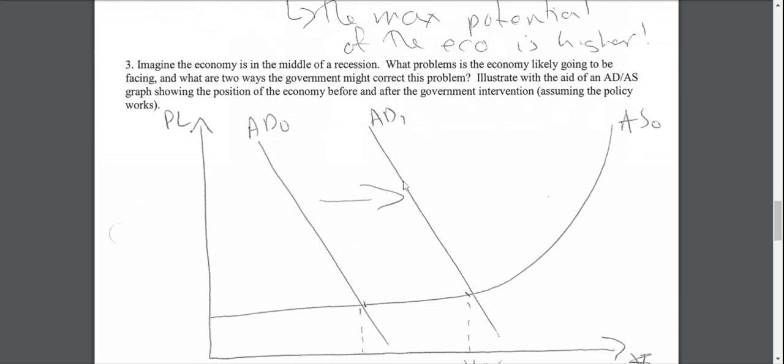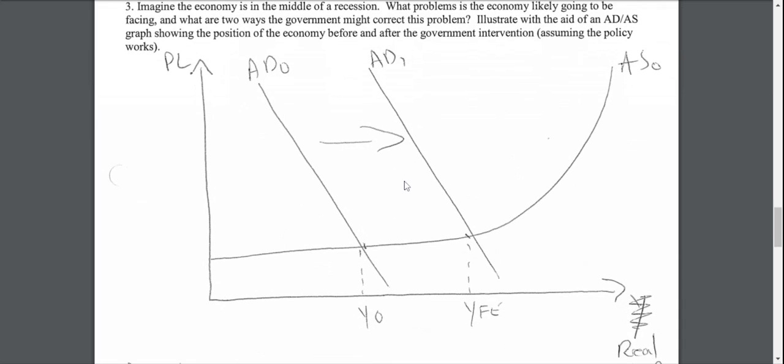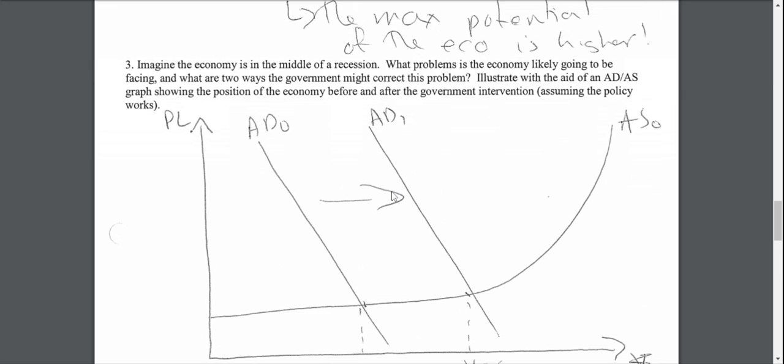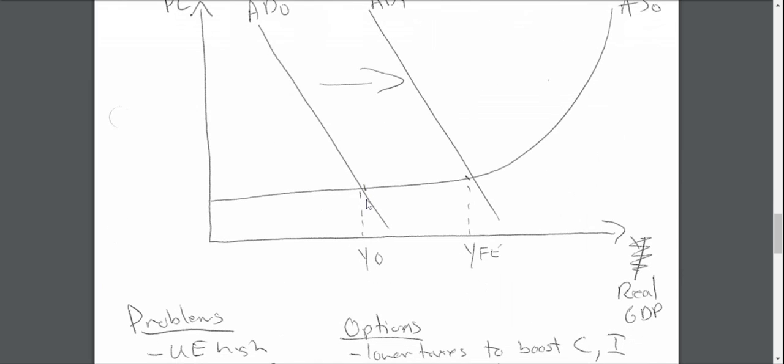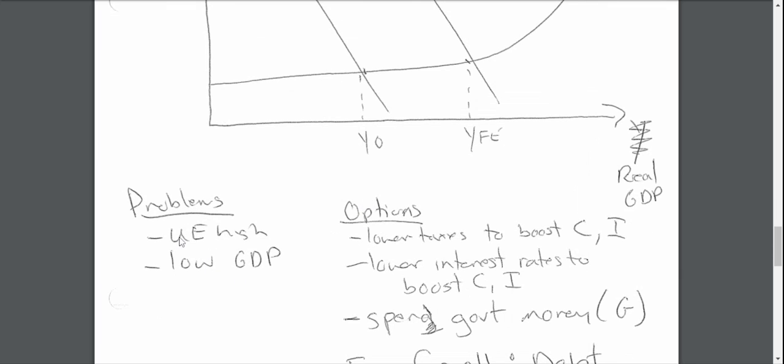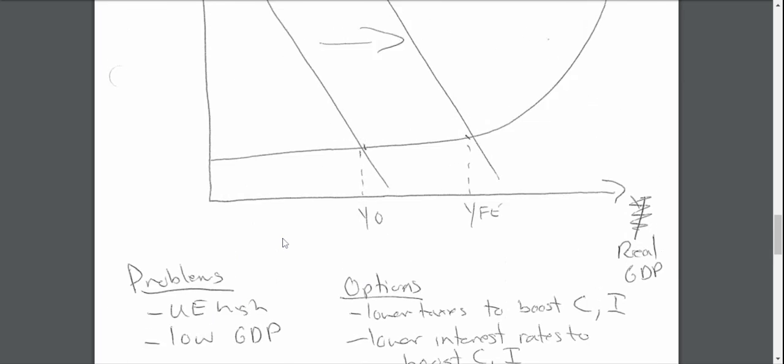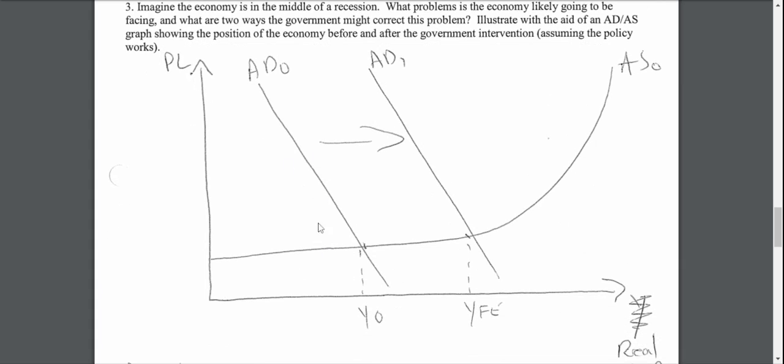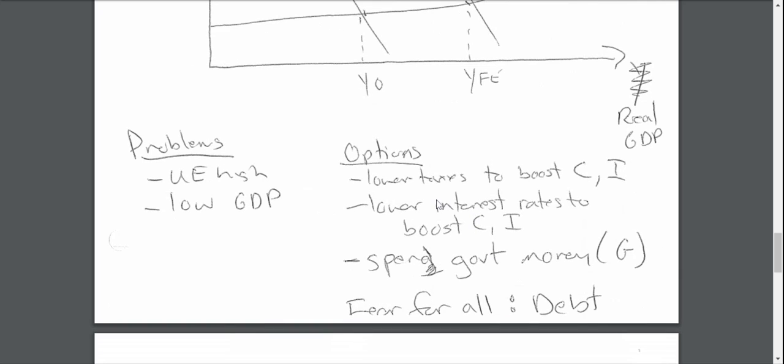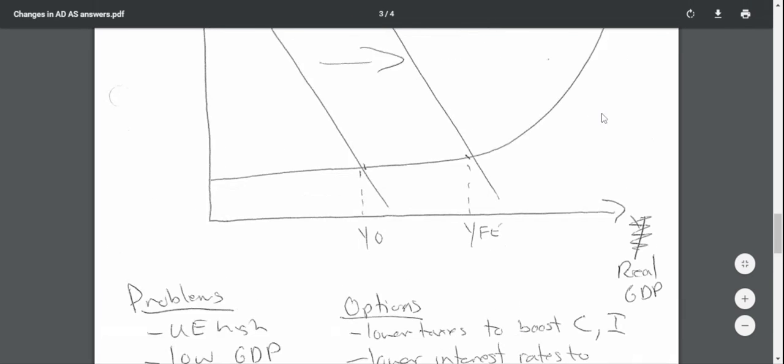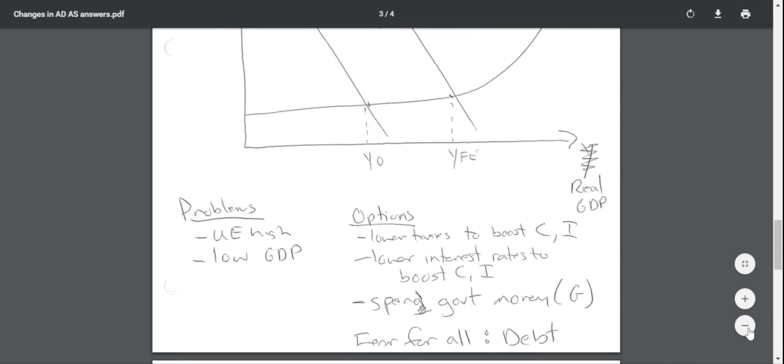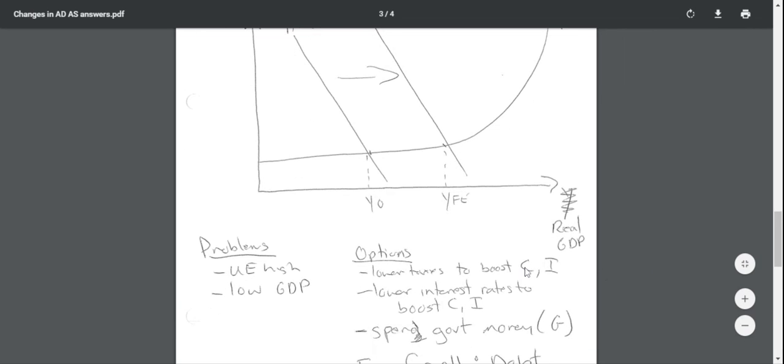The last question says: imagine the economy is in the middle of a recession. What problems is the economy likely to be facing and how might the government fix that? Well, I think the problems with a recession are obvious, and I put them down here: you have high unemployment, you have low GDP. And so your goal would be to try to take that underperforming economy, which you can see there, and push the aggregate demand curve to the right through government policy to try to reduce the unemployment, increase the GDP. How could you do that? Well, there's a number of ways. One of them is that you can lower taxes to boost consumption and investment. I'm just going to zoom out a little bit so you can see this a little bit better as a whole. You also could lower interest rates, so the bank may decide to lower interest rates to try to increase the growth in that direction.